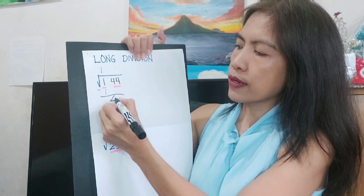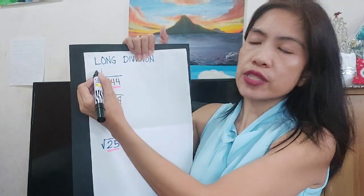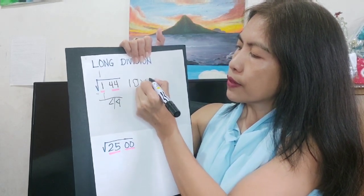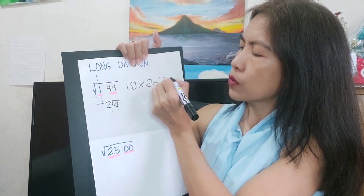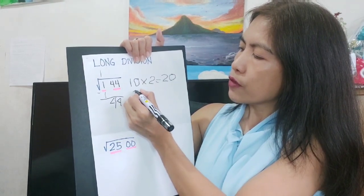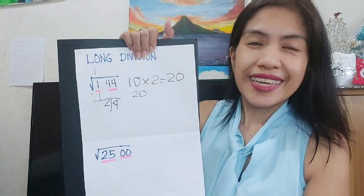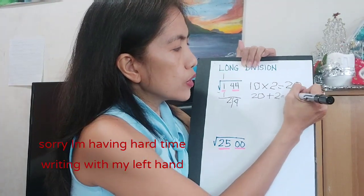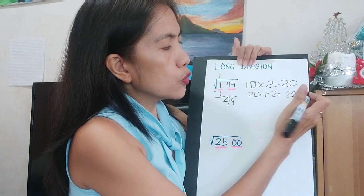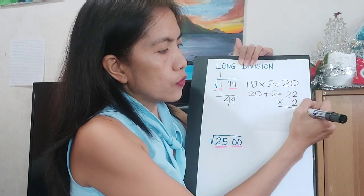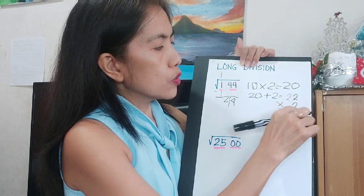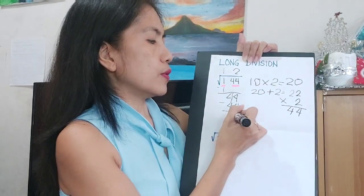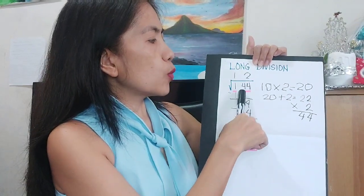Take the 1, annex a 0, and double it to get 20. Divide 44 by 20 — it gives 2. So 20 plus 2 is 22. Multiply 22 by 2 to get 44. 44 minus 44 is 0. Therefore, the square root of 144 is 12.